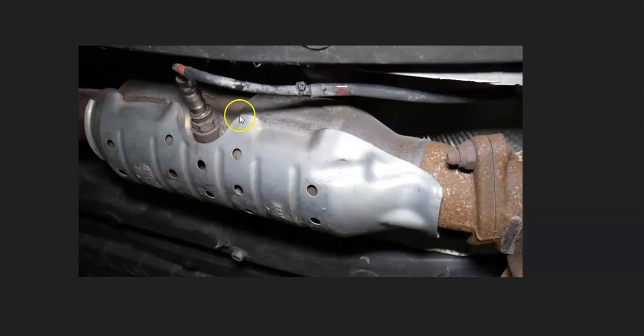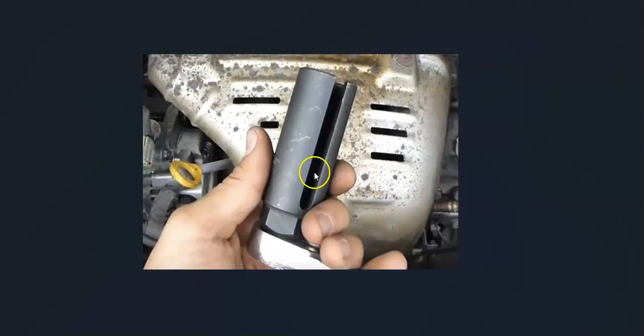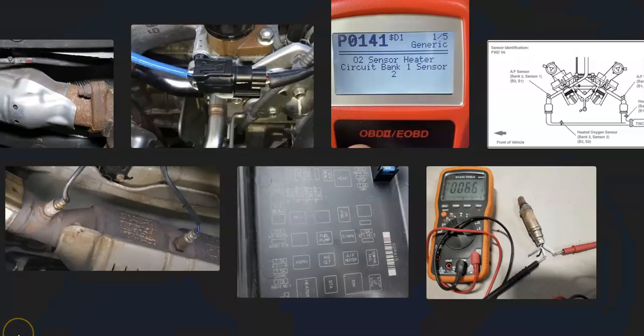A lot of people just replace the bank 1, sensor 2 oxygen sensor. One thing to keep in mind is that sometimes you need a special tool to get them out and back in, especially to get around the wire. Sometimes they're out in the open, sometimes they're recessed into the exhaust where you need a special tool. Look at it and see if you have the right tools. When you get a new oxygen sensor, be sure to get that special tool if needed.